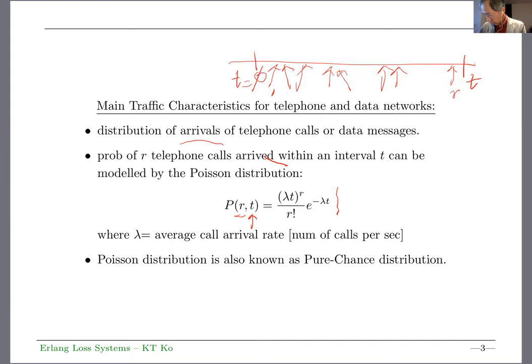Telephone calls come in an irregular pattern into the exchange. The first one, second one, third one, and so on, finally to the value of r. What I'm saying is, what's the probability of r calls in duration t? Poisson distribution is also known as pure chance distribution because the variance equals the average. We also look at inter-arrival time.